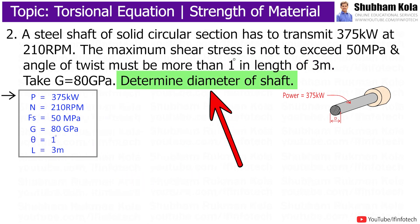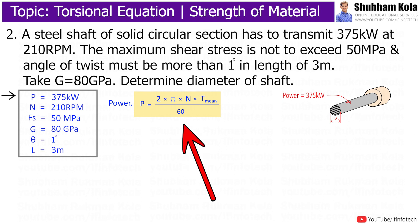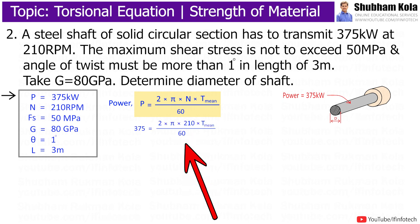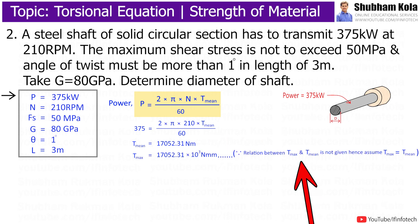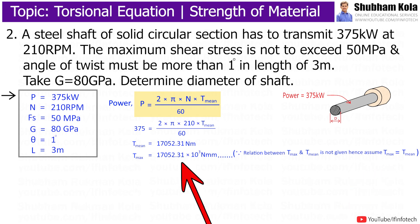To find out the diameter, first we need to calculate maximum torque. Power equals 2π N T_min divided by 60. Putting in all the values, mean torque we got is 70,052.31 Nm. In the problem, the relation between T_min and T_max is not given, therefore assume T_min is equal to T_max. Therefore, T_max equals 70,052.31 × 10³ Nm.